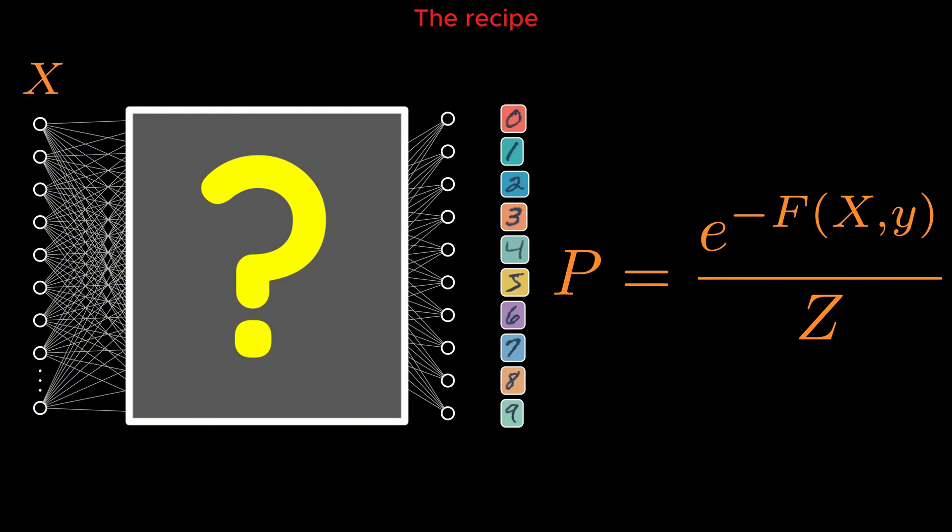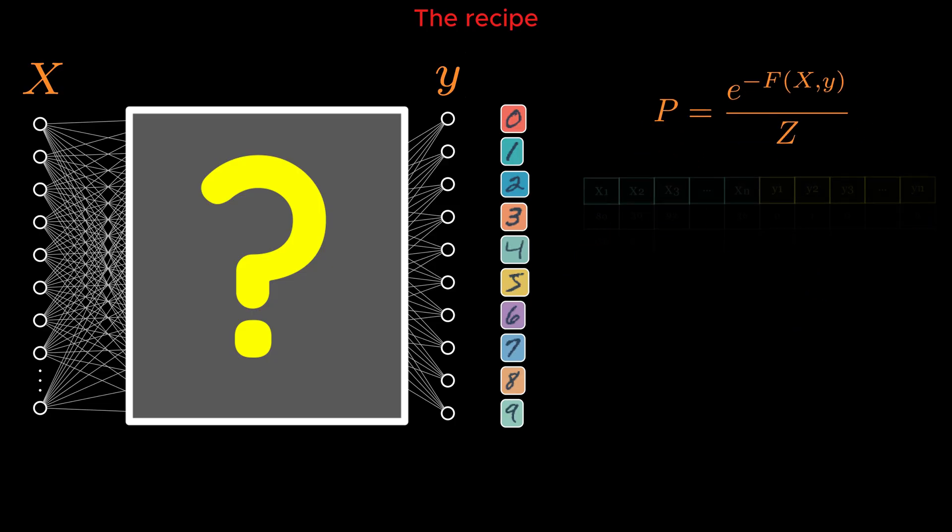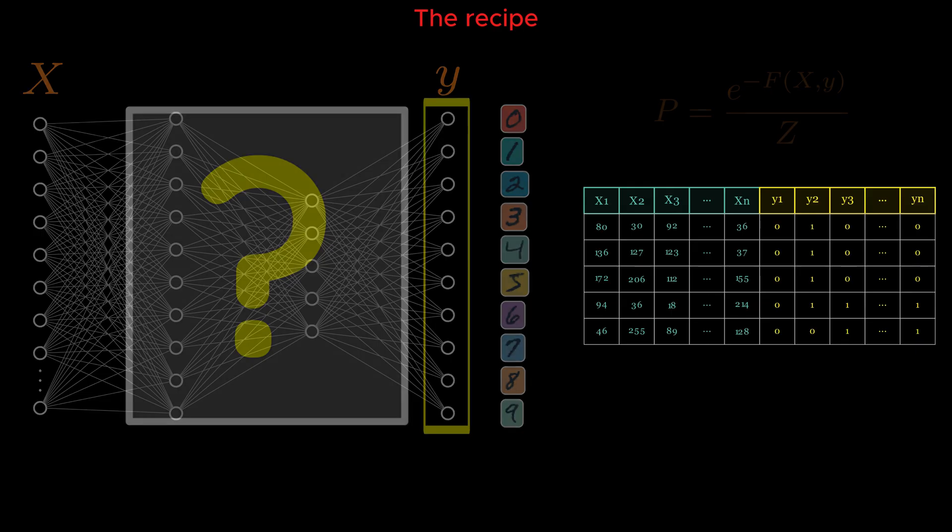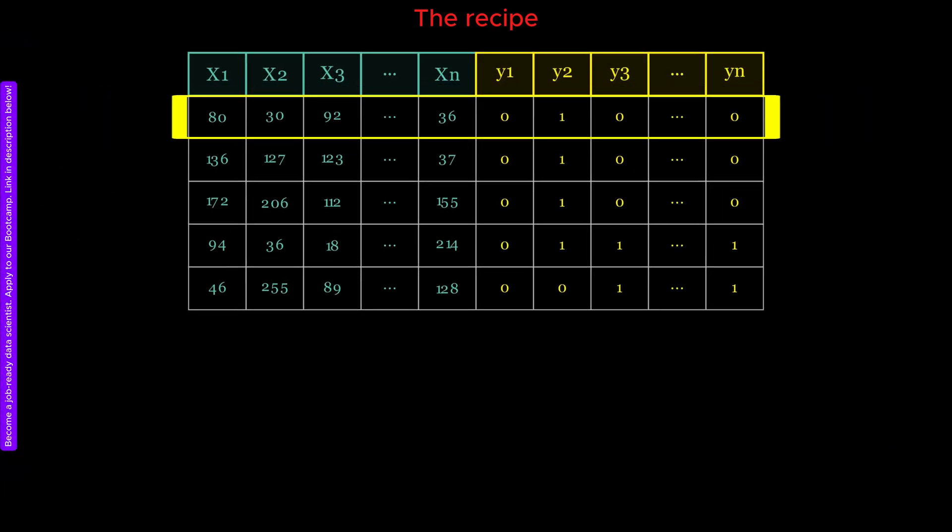We use X to refer to the neurons of the input layer, and Y to refer to the neurons of the output layer. We then construct a spreadsheet whose columns represent the pixels of the input images, as well as the states of the 10 output neurons. Each row of this spreadsheet represents one observation, which is a vector in a high-dimensional space whose dimensionality is equal to the number of columns.